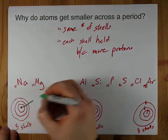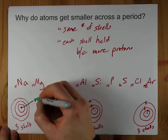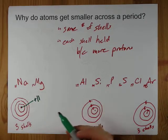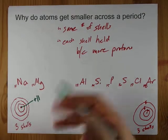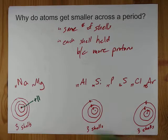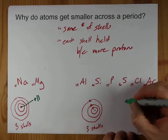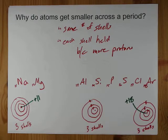The real difference is that sodium's nucleus has a plus 11 charge in it, because you have 11 protons and a bunch of neutrons. By the time you get to argon, you have a plus 18 charge in the nucleus.